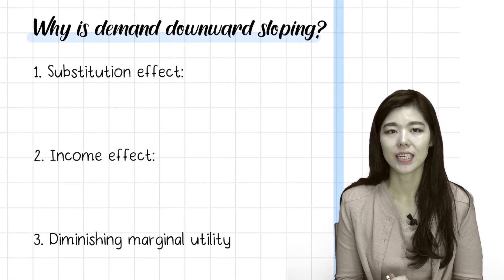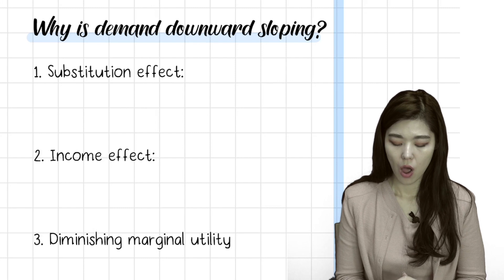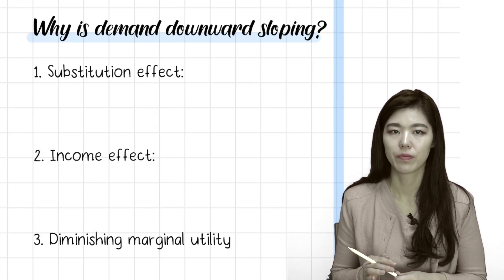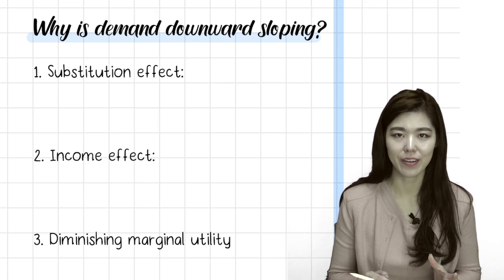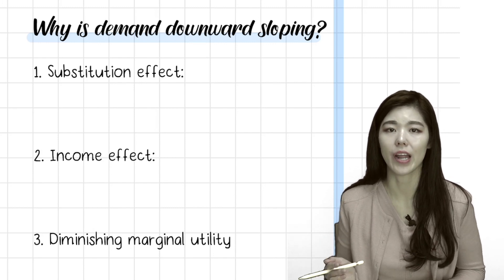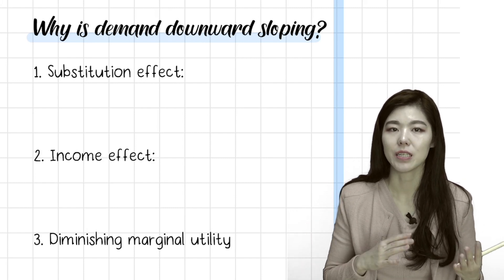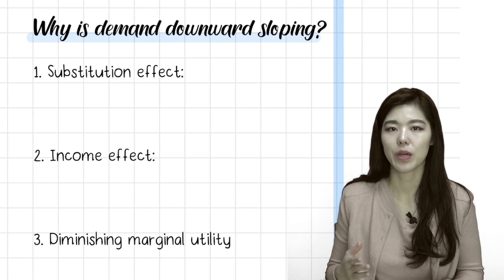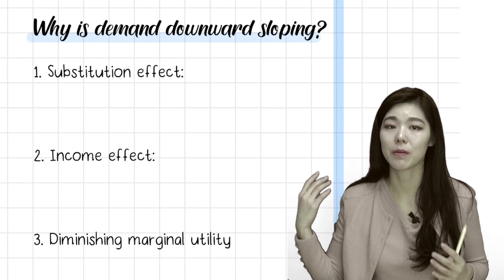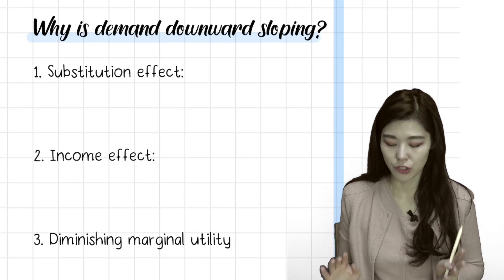Some questions may be asking, why is the demand downward sloping? There are three reasons. One is substitution effect. Why people buy less when price is higher is because they have other substitutes to buy when the price gets too high. For example, if Coke's price doubled from one dollar to two dollars, then we will buy a cheaper Pepsi Cola that is still one dollar. That's why people buy less of cola when the price is higher. They can find a substitute and buy the substitute instead and buy less cola. That's the substitution effect.